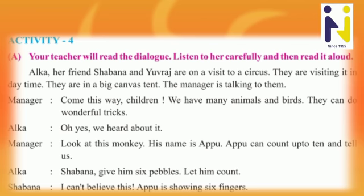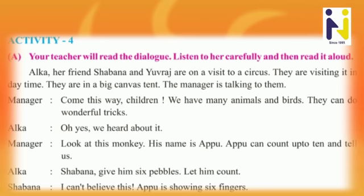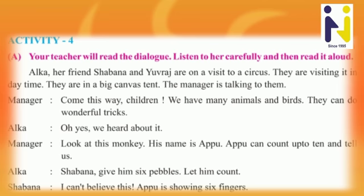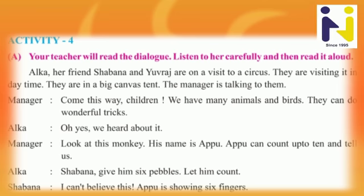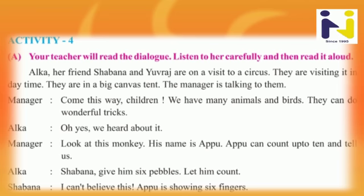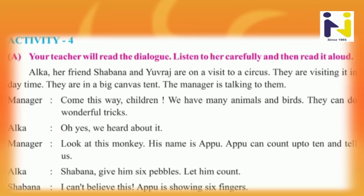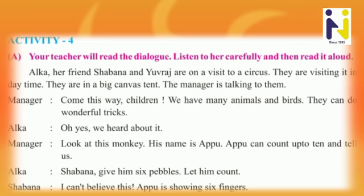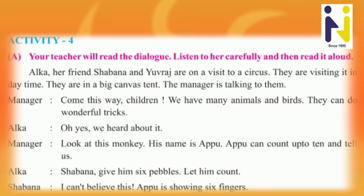Alka says: 'Shabana, give him six pebbles.' — Pebbles means small stones (kankra). — 'Tene chho kankra aap. Let him count.' — 'Tene ganva de.'